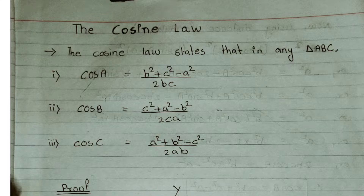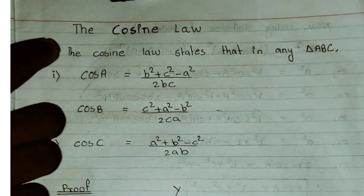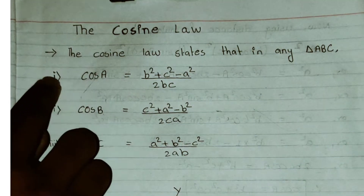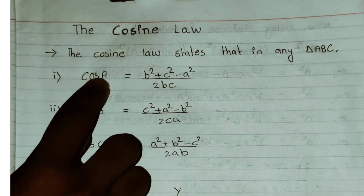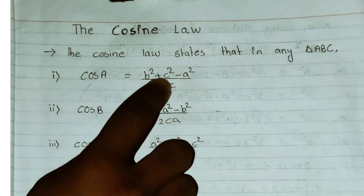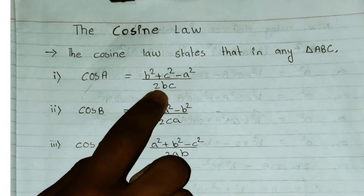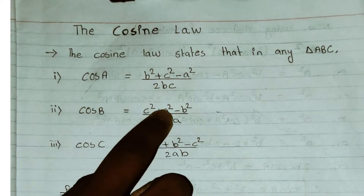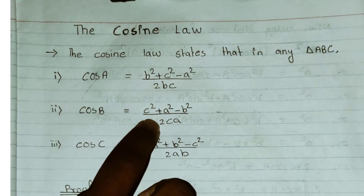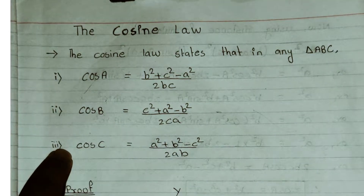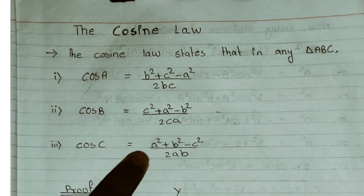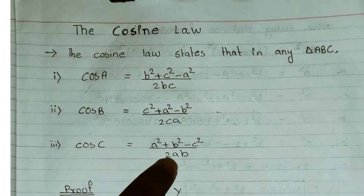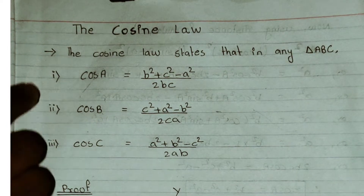The cosine law states that in any triangle ABC: first, cos A equals b squared plus c squared minus a squared over 2bc; second, cos B equals c squared plus a squared minus b squared over 2ca; and third, cos C equals a squared plus b squared minus c squared over 2ab.